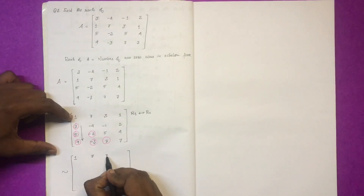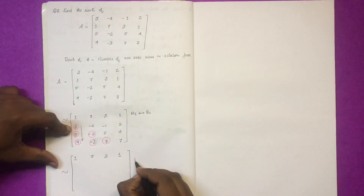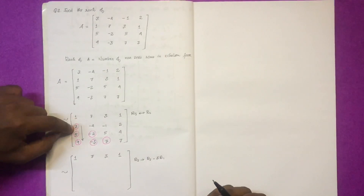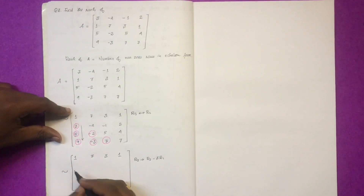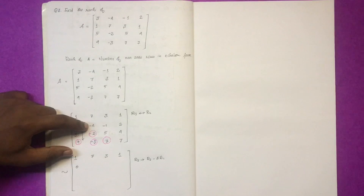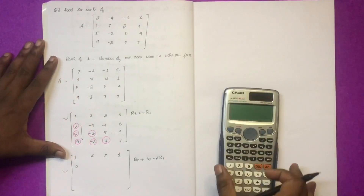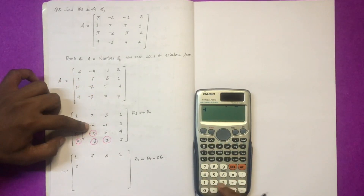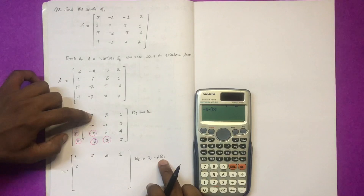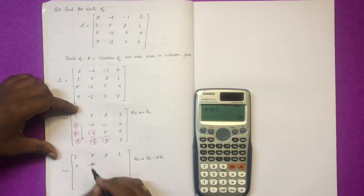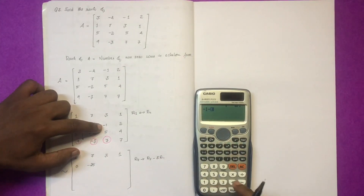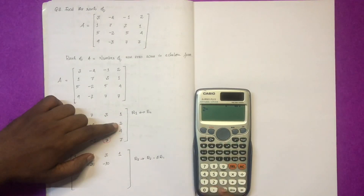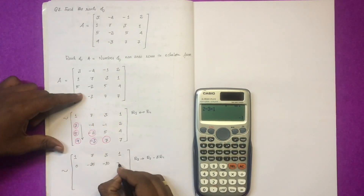Row 1 is 1, 7, 3, 1. Now R2 changes to R2 minus 3 times R1. R2 becomes: minus 4 minus 3 into R1 gives minus 7, minus 7, so this is minus 25. And minus 2 minus 3 into R1 is minus 3, which is minus 10. Then 2 minus 3 into R1, which is equal to minus 1.